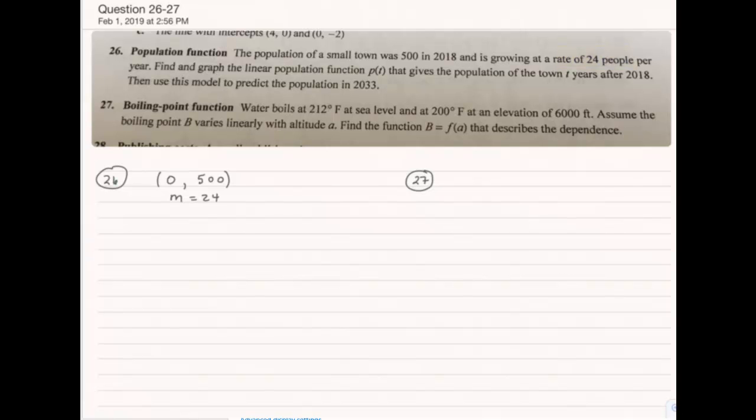For the second problem, instead of giving a slope, we're given two separate data points. At sea level, water boils at 212 degrees. At 6,000 feet, water boils at 200 degrees.